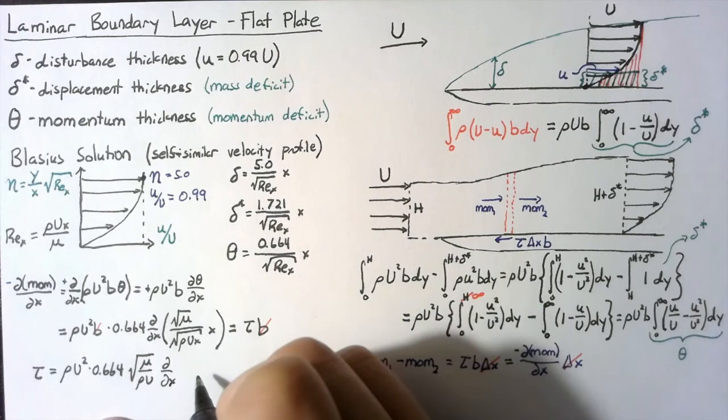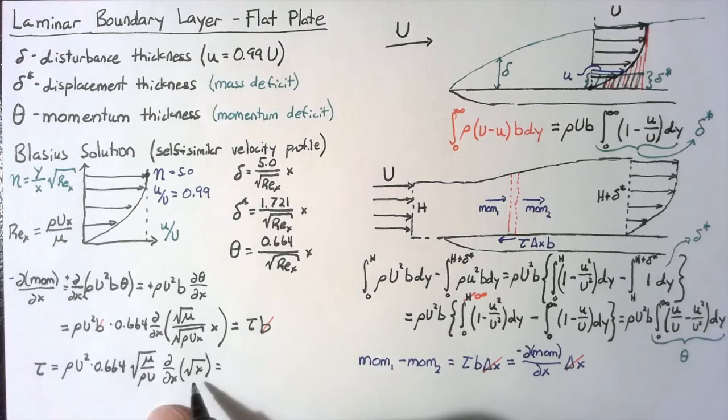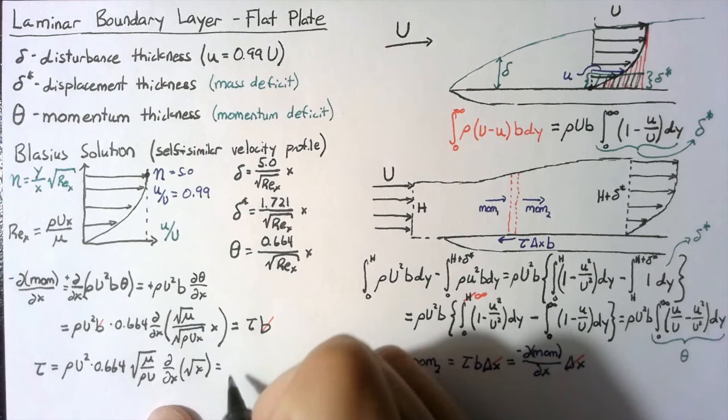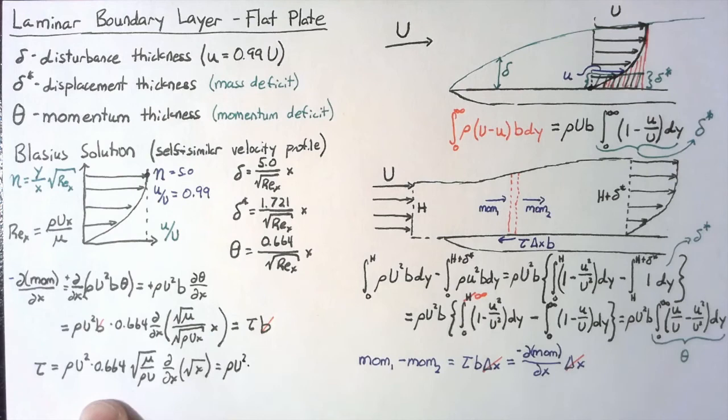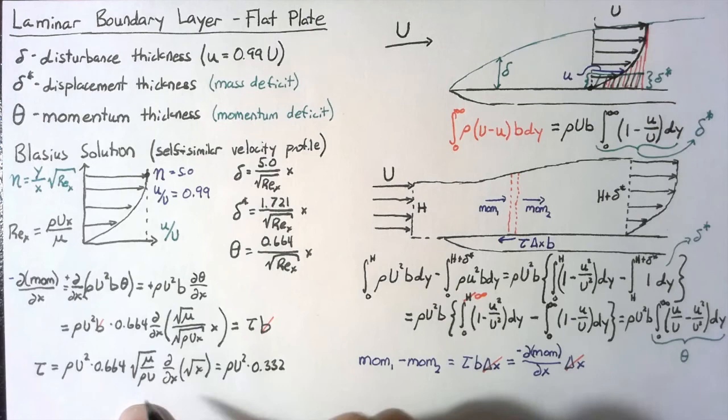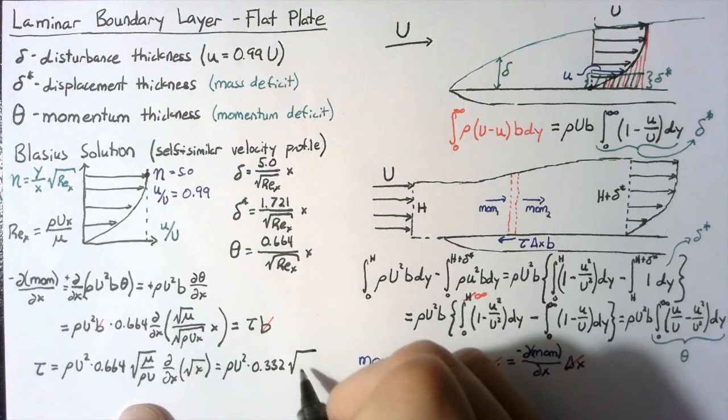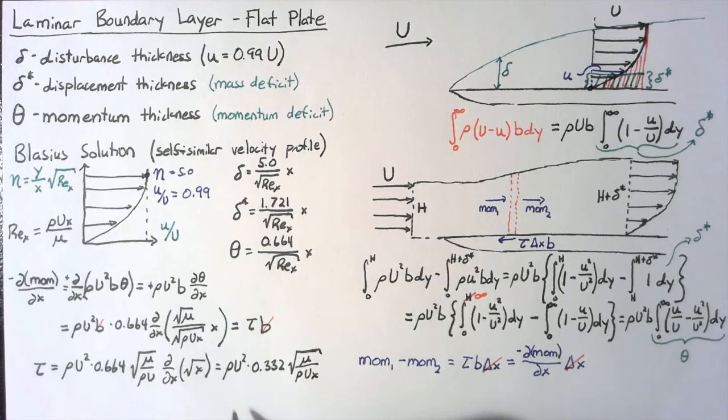The derivative of the square root of x is just equal to one half multiplied by one over the square root of x. So this ends up being rho U² multiplied by 0.664 divided by 2, or 0.332, and then we have the square root of mu over rho U x. The end result is that tau is equal to rho U² times 0.332 divided by the square root of the Reynolds number.